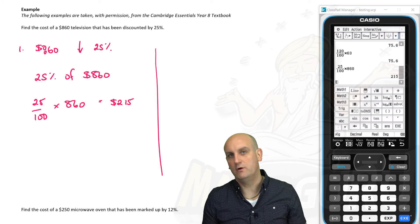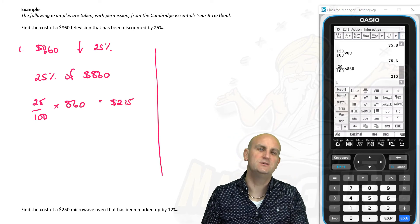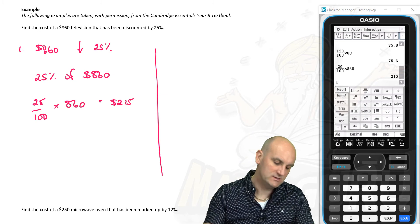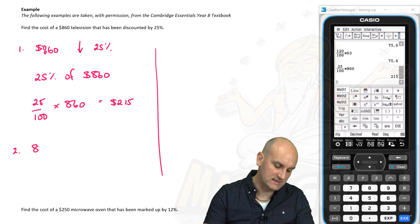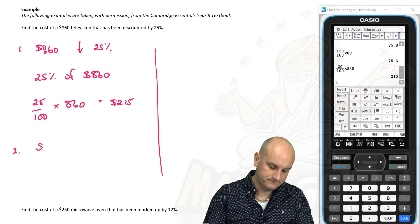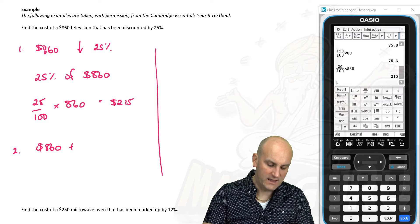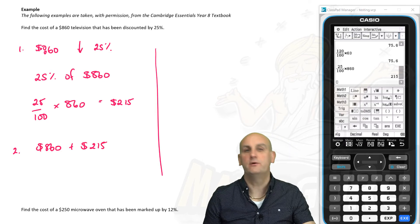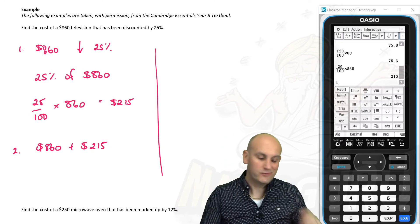Now this is where, sadly, people go wrong with this method because we get so used to doing increases. We now do something stupid like, oh, I've got, so this is the second stage. I've got $860. And we're going to add on $215. And that's where it all goes horribly wrong. Why?